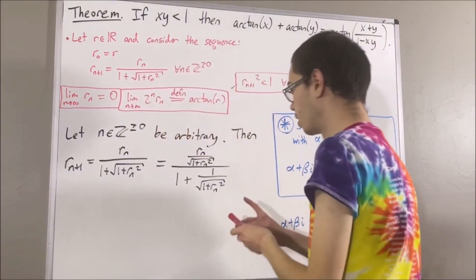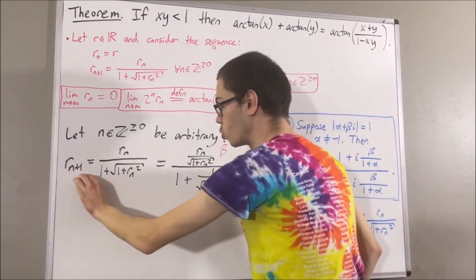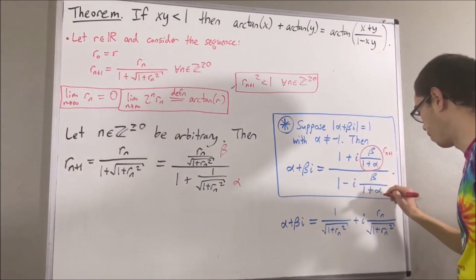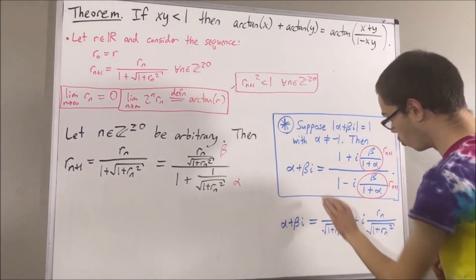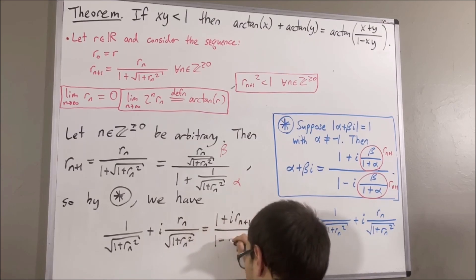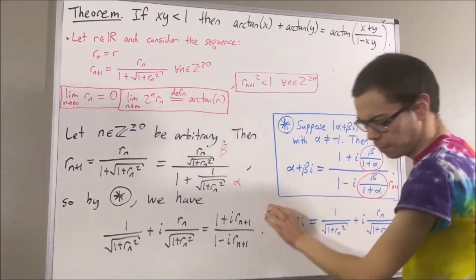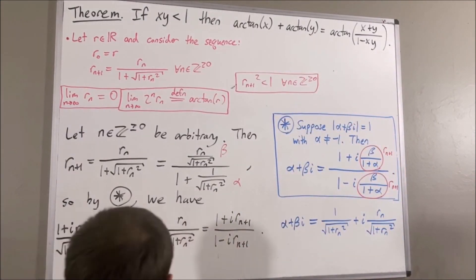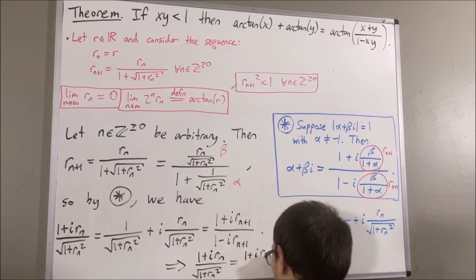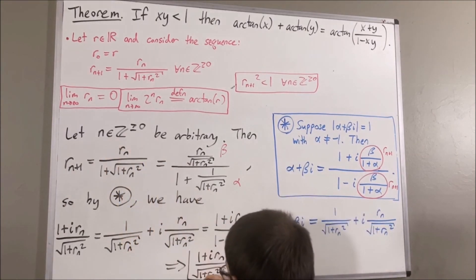Notice the numerator here is just beta, and the denominator is 1 plus alpha. So rn plus 1 is equal to beta over 1 plus alpha. Therefore, we're going to replace beta over 1 plus alpha with rn plus 1, and replace alpha plus beta i with this expression. So we get this, and adding the two fractions together, we get this. What this tells us is: given any integer n greater than or equal to 0, it follows that these two expressions are equal.